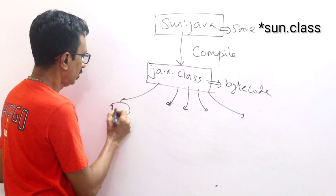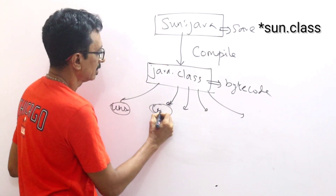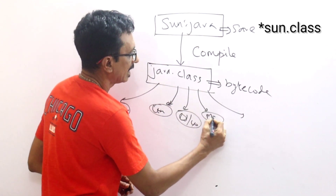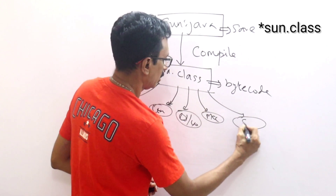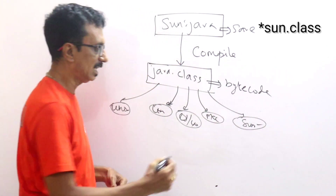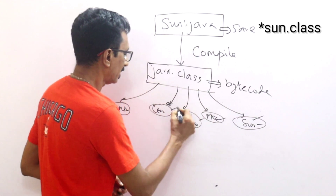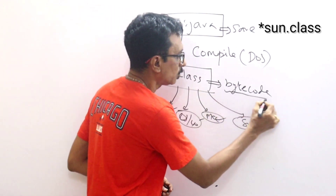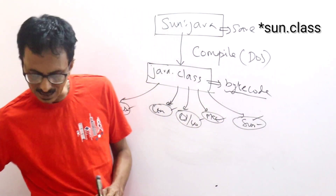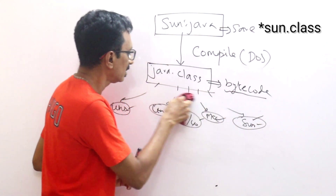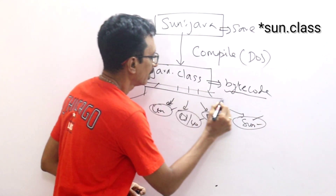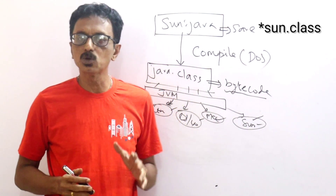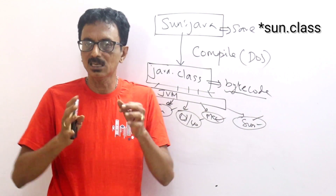This is UNIX. This is Linux. This is OS/400. This is Mac. This is Sun Solaris. What is the OS? JVM — Java Virtual Machine. This is not real, that is imaginary — one virtual computer.